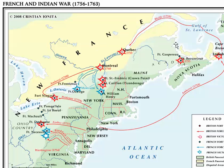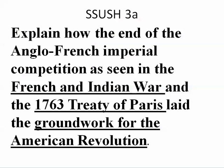Let's look at this map. Here are some of the engagements that took place. In blue are some of the French victories, including Fort Necessity. In red are some of the British victories all along the St. Lawrence River. So how does this end? We really don't want to get too much into the French and Indian War — we want to look at what the impact was. Let's explain how the end of the Anglo-French Imperial competition and the 1763 Treaty of Paris laid the groundwork for the American Revolution.